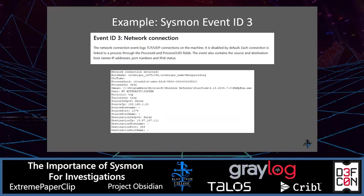For Event ID 3 (network connection), the rule name again shows the MITRE ATT&CK ID from Olaf's config. You can see the user, the protocol, source IP, source port, destination IP, and destination port — absolutely wonderful and so valuable.